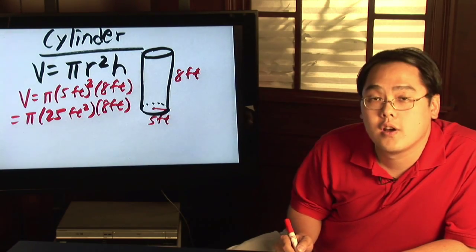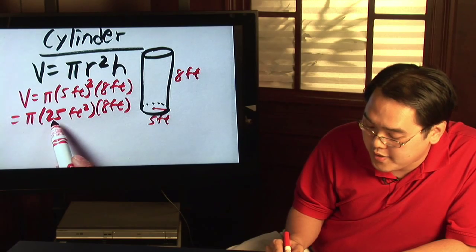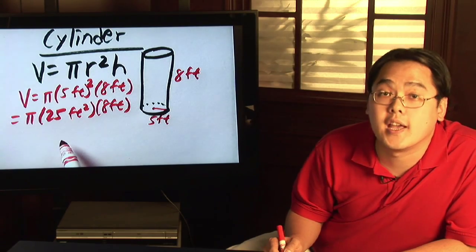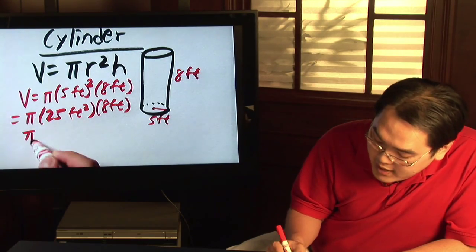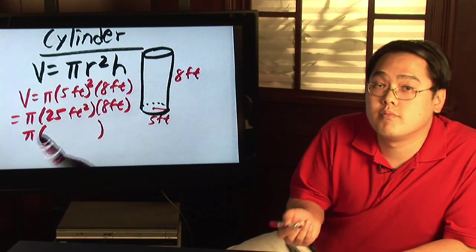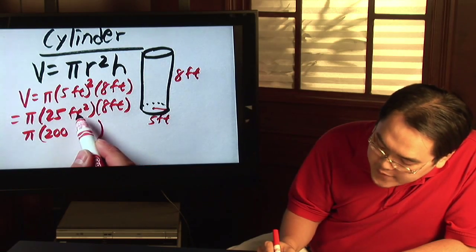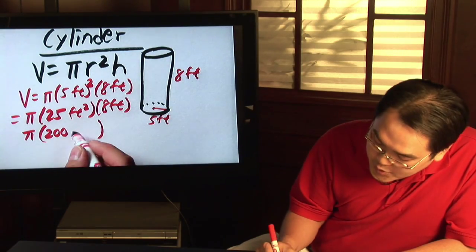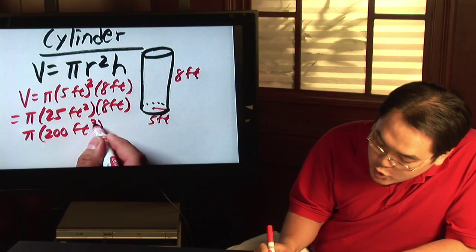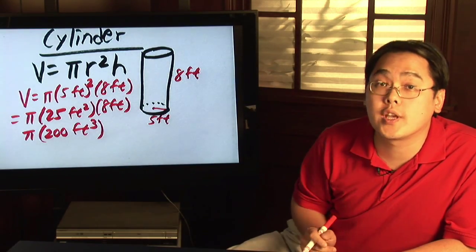So you have pi. All it takes now is to multiply these numbers and these feet and you're done. You have pi times twenty-five times eight. Calculator or in your mind, that's going to be two hundred. And feet squared times feet is going to be feet cubed or cubic feet, which is what you're looking for.